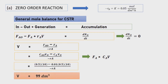To solve this problem, first we need to write the general mole balance for CSTR. Rearrange the equation and make V the subject. Substituting all values into this equation, we get the volume for CSTR as 99 decimeter cubed.